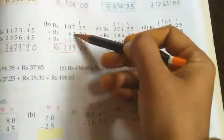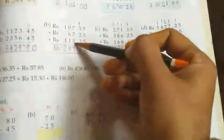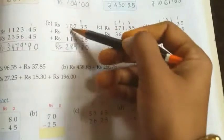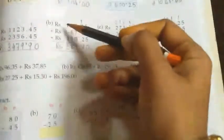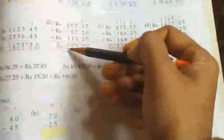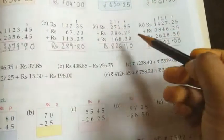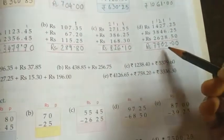Then 7 plus 7 equals 14, 14 plus 5 equals 19, write 9 here and carry 1. 1 plus 6 equals 7, plus 1 equals 8. Now here 1 plus 1 equals 2. So 289 rupees and 80 paise. Same way this sum we have to do.